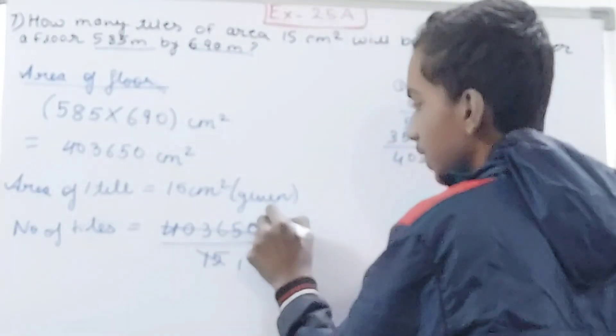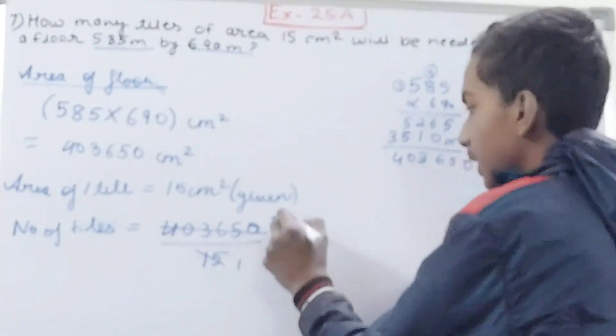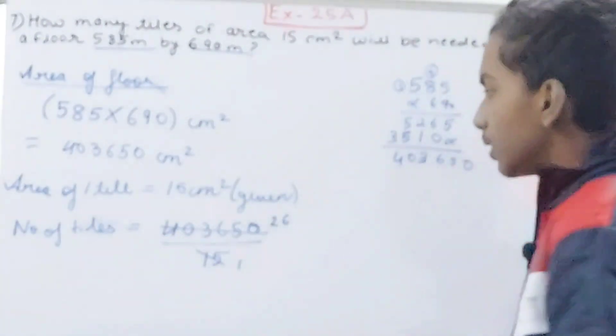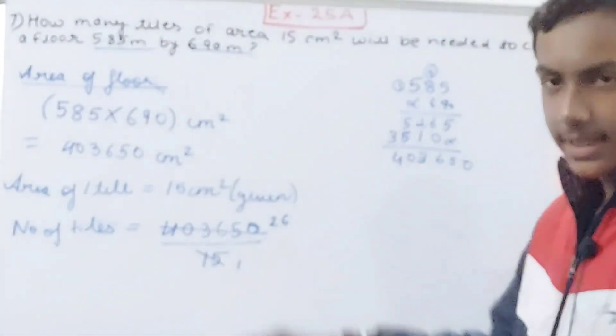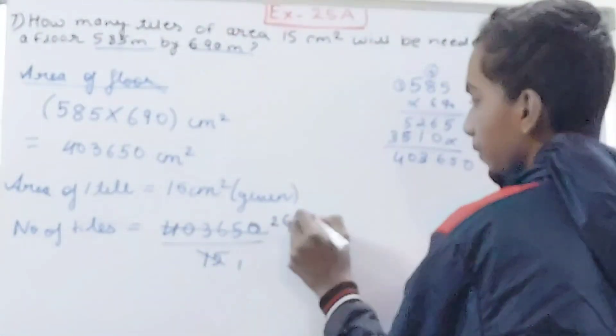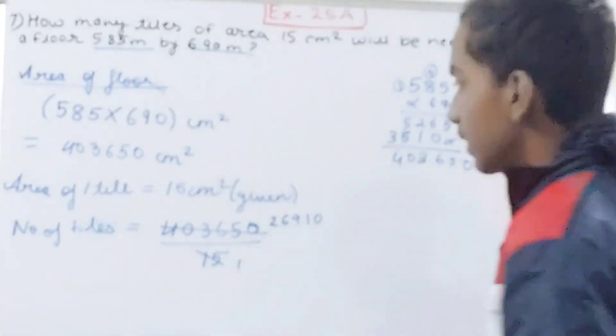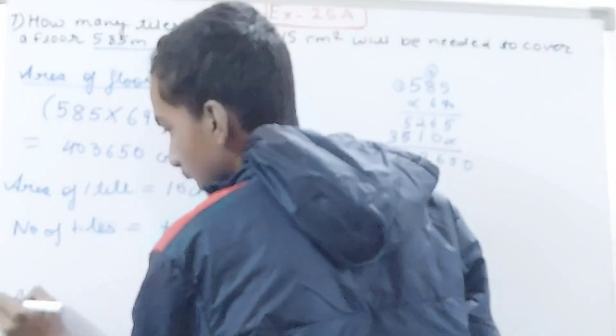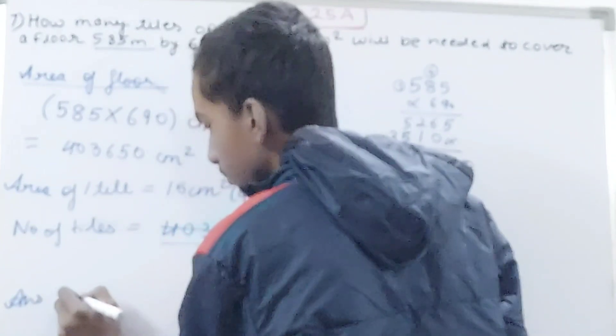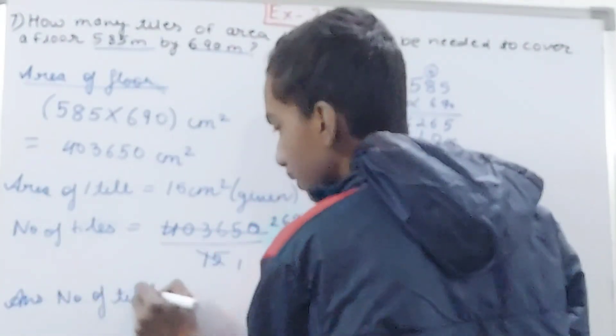See, cancel this by 15. This 15 will go one times, 40... [working through the division] ...take 135, nine times, and 15 one times again, and another zero, so 26,910. So you can write here answer as number of tiles required is 26,910. That's the number of tiles.